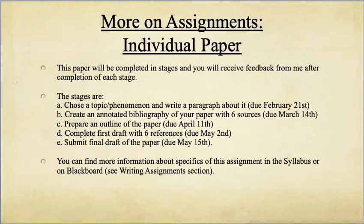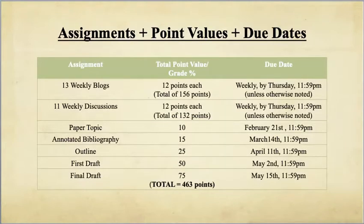The individual paper will be completed in stages and you will receive feedback from me after each stage. First, you will choose a topic and submit a paragraph about it, due February 21st. Then an annotated bibliography with at least six sources is due March 14th. The outline is due April 11th, the first draft with six references is due May 2nd, and your final draft is due May 15th. More information about this assignment can be found in the syllabus or on Blackboard.